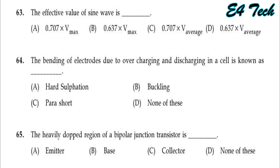The effective value of a sine wave: the effective value is the RMS value. Vrms is equal to Vm divided by root 2, that is 0.707 Vmax. That is Option A.